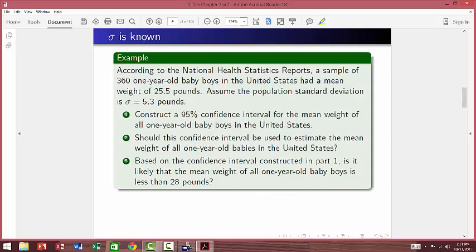Let's go ahead and take a look at a problem. According to the National Health Statistics report, a sample of 360 one-year-old baby boys in the United States had a mean weight of 25.5 pounds. And they also tell us that the population standard deviation is 5.3 pounds. So they tell us that the population standard deviation is given. That's your sigma is known. When we have a situation where sigma is known, we will be using z interval to construct this interval.